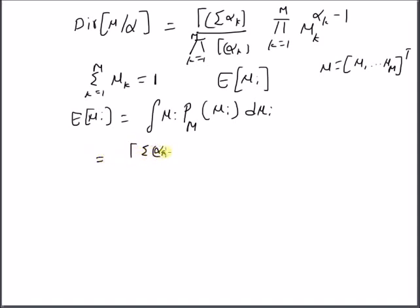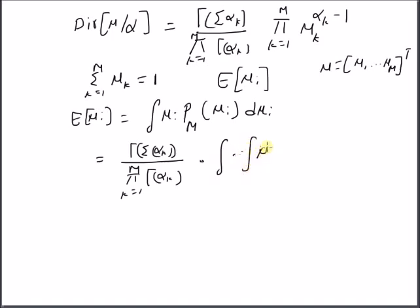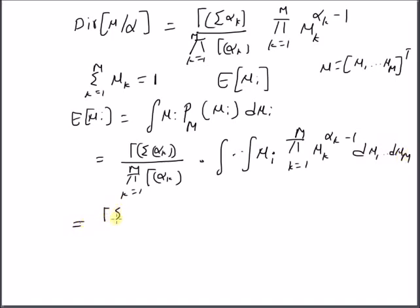This can be rewritten with the normalizing coefficient — the gamma function of the summation divided by the product of the gamma functions — times the integral of mu_i times the product k=1 to m of mu_k to the alpha_k minus 1, d mu_1 up to d mu_m.